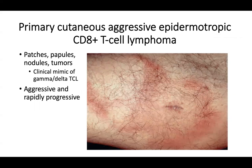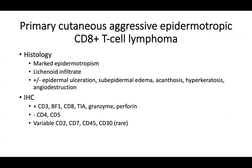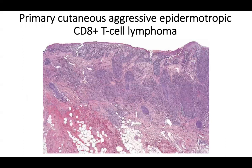Primary cutaneous aggressive epidermotropic CD8-positive T-cell lymphoma presents with patches, papules, nodules, and tumors; clinically mimics gamma-delta T-cell lymphoma and is also aggressive and rapidly fatal. Histology shows marked epidermotropism, lichenoid infiltration, plus or minus epidermal ulceration, subepidermal edema, acanthosis, hyperkeratosis, and angiodestruction. Immunohistochemically: CD3-positive, beta-F1-positive, CD8-positive, TIA1, granzyme, and perforin-positive; usually negative for CD4 and CD5 with variable expression of CD2, CD7, CD45, and CD30.